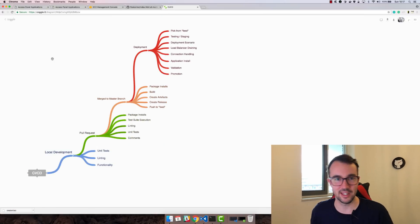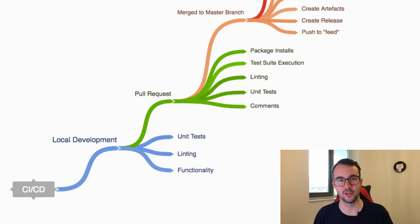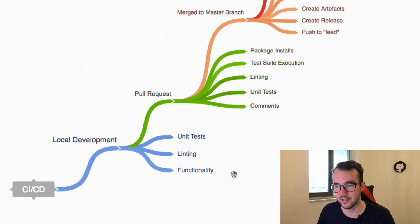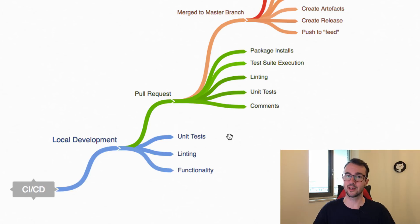I want to take a quick look at this diagram I've put together because it sums up what I want to go through in this series. We're going to be building and developing a Python Flask web application locally. Here you can see the local development part — things like unit testing, which is really fundamental. Running unit tests locally gives confidence, and instilling confidence in developers is one of the core principles of CI.